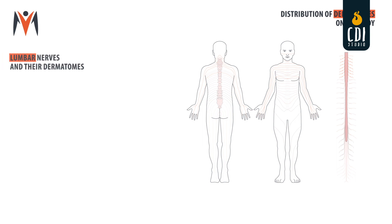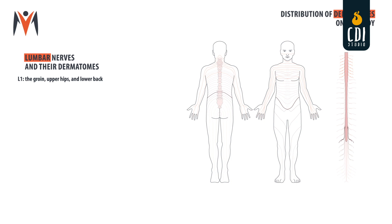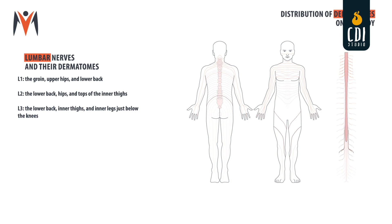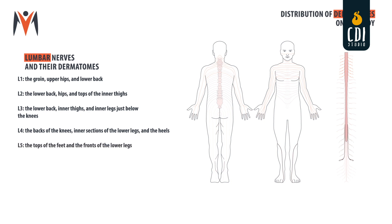Lumbar nerves and their dermatomes. L1: the groin, upper hips and lower back. L2: the lower back, hips and tops of the inner thighs. L3: the lower back, inner thighs and inner legs just below the knees. L4: the backs of the knees, inner sections of the lower legs and the heels. L5: the tops of the feet and the fronts of the lower legs.